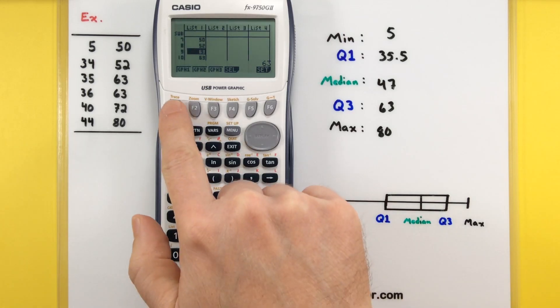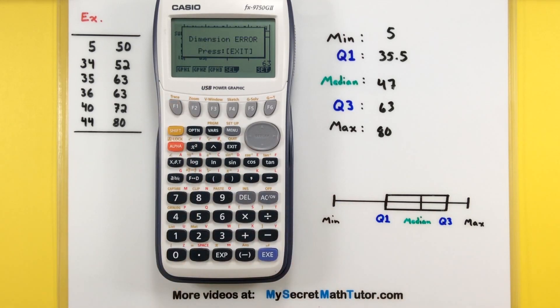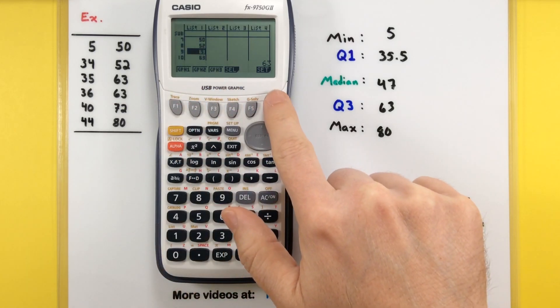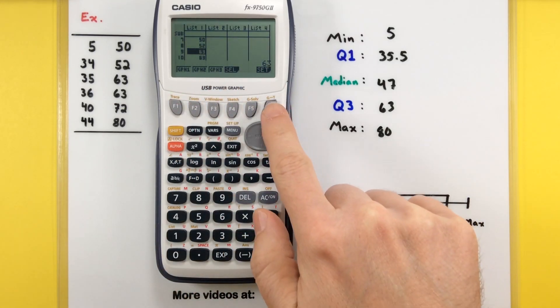But you'll notice if you actually just press graph, it'll give you a dimension error. That means we have to set a few settings first to make sure that it knows it's a box plot. Usually it thinks it's a scatter plot of some sort, and of course it's not going to be able to make that scatter plot unless it has X and Y values. So before we get too far, let's go ahead to set the settings in here. So that's F6.